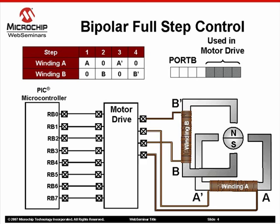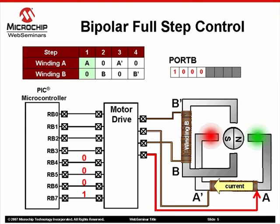Let's step through this algorithm. The first step applies a positive voltage, or logic high, to winding A's lead A while driving lead A' low. Current is generated in the direction shown, creating a magnetic flux, polarizing the stator poles accordingly. The rotor rotates to minimize the magnetic flux flow reluctance.